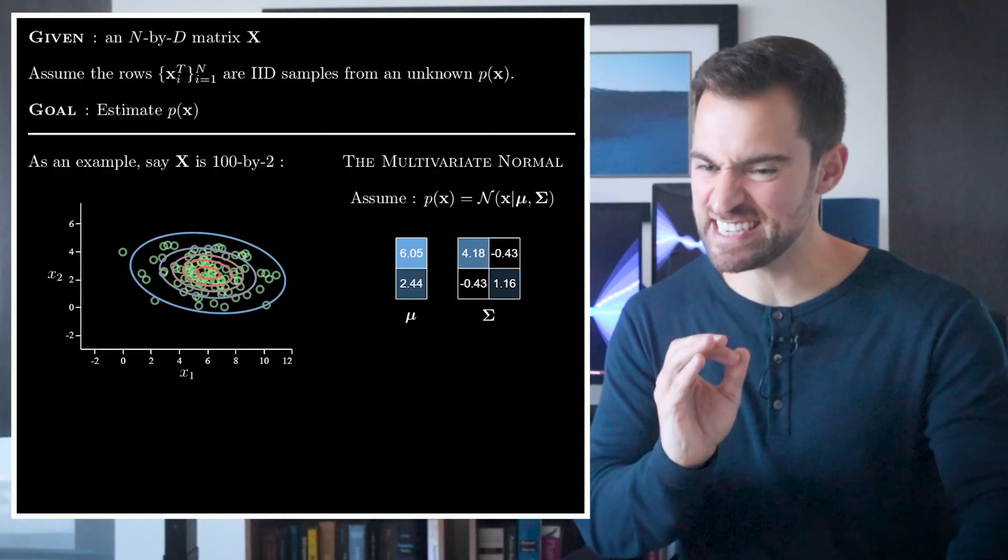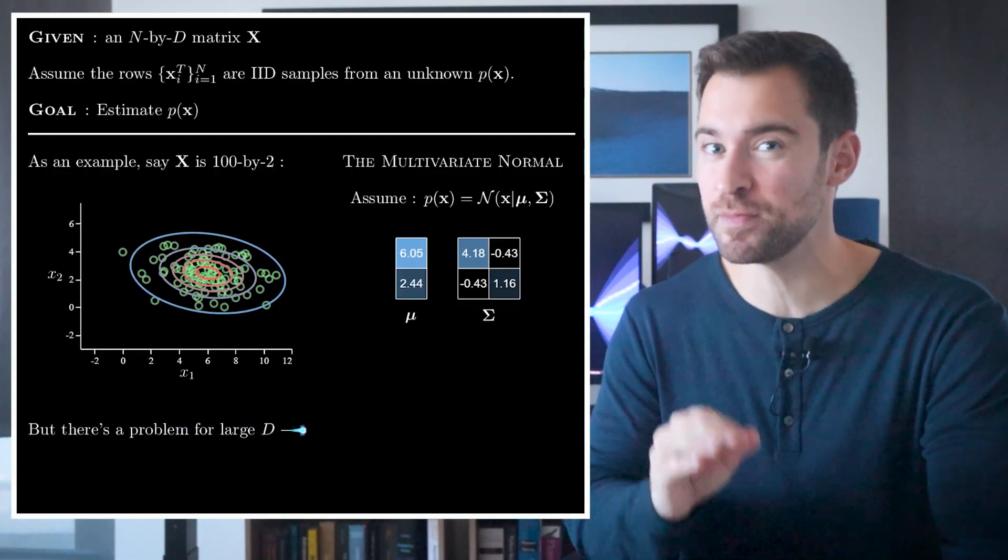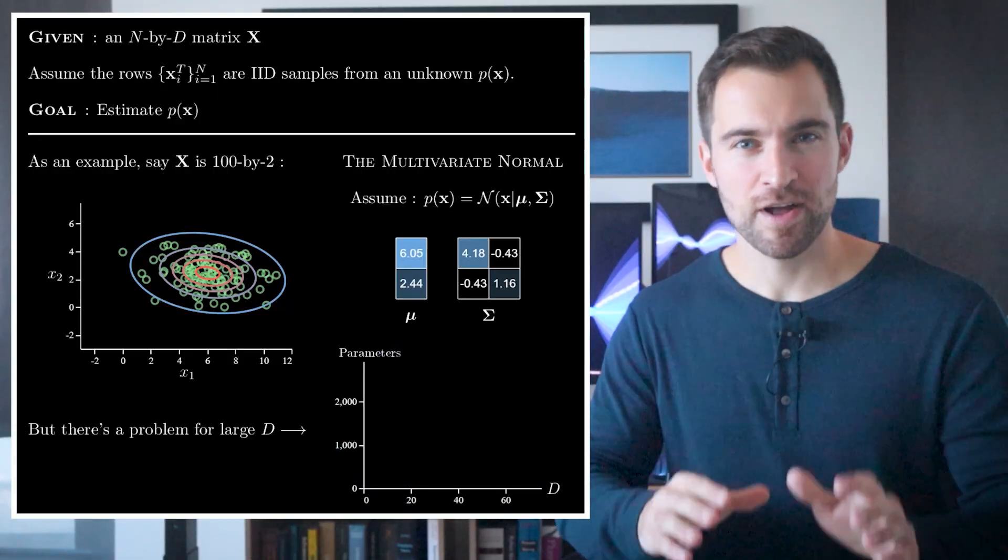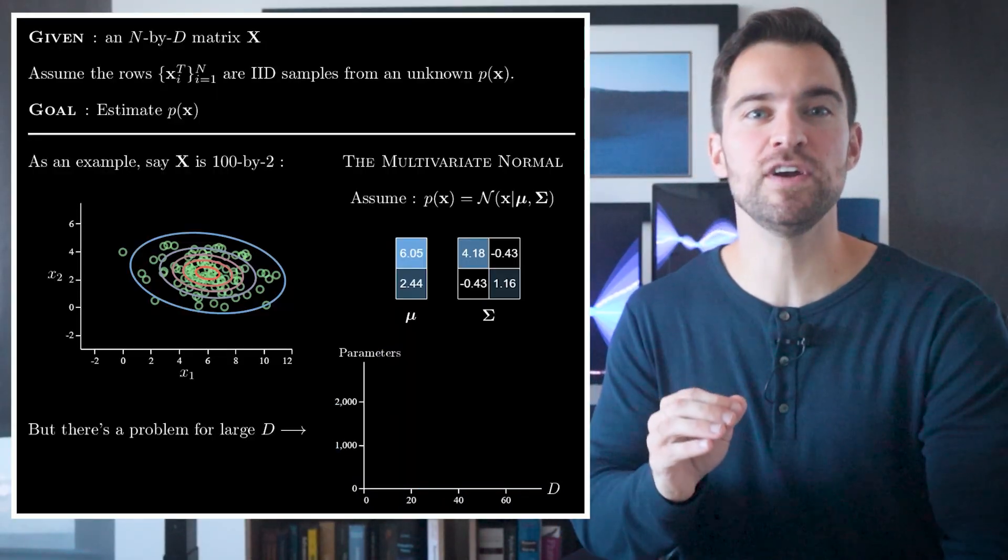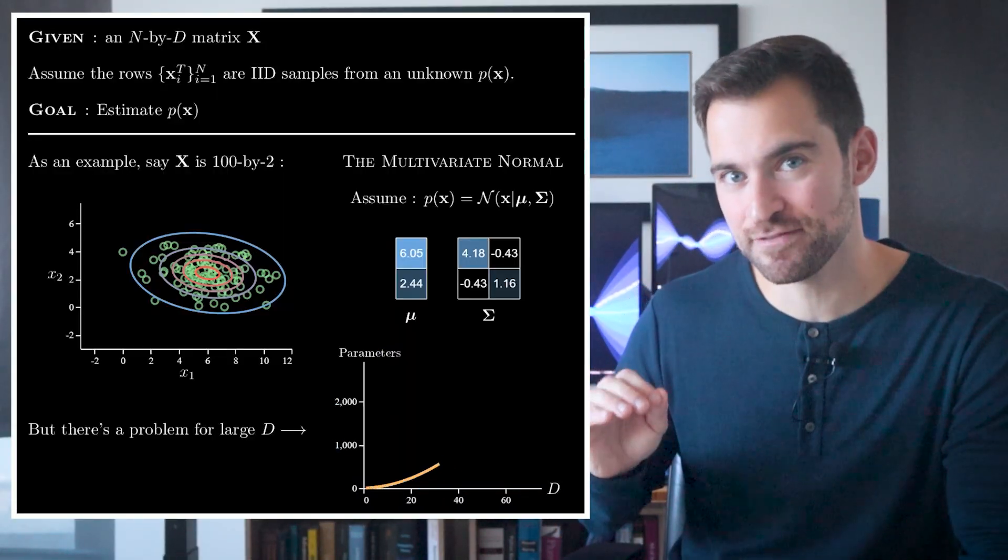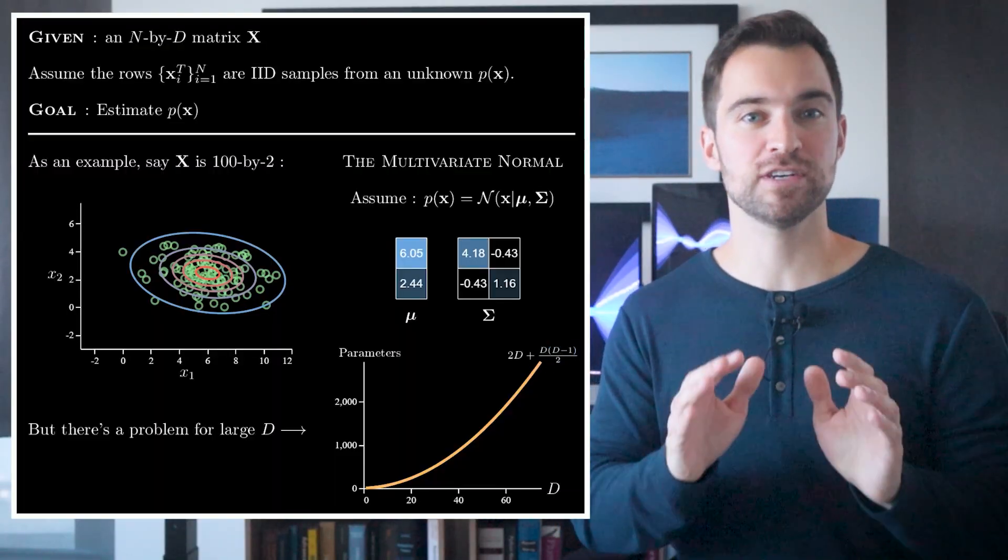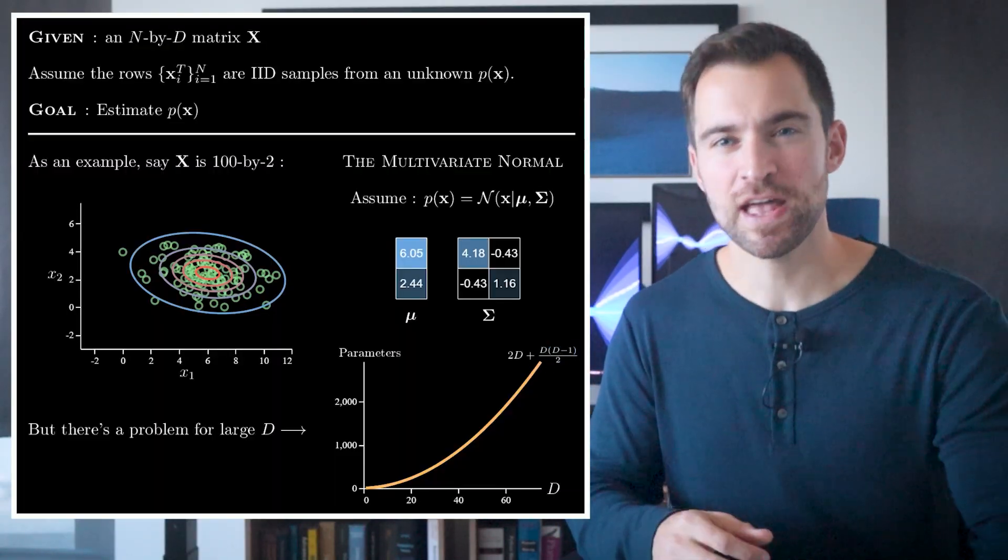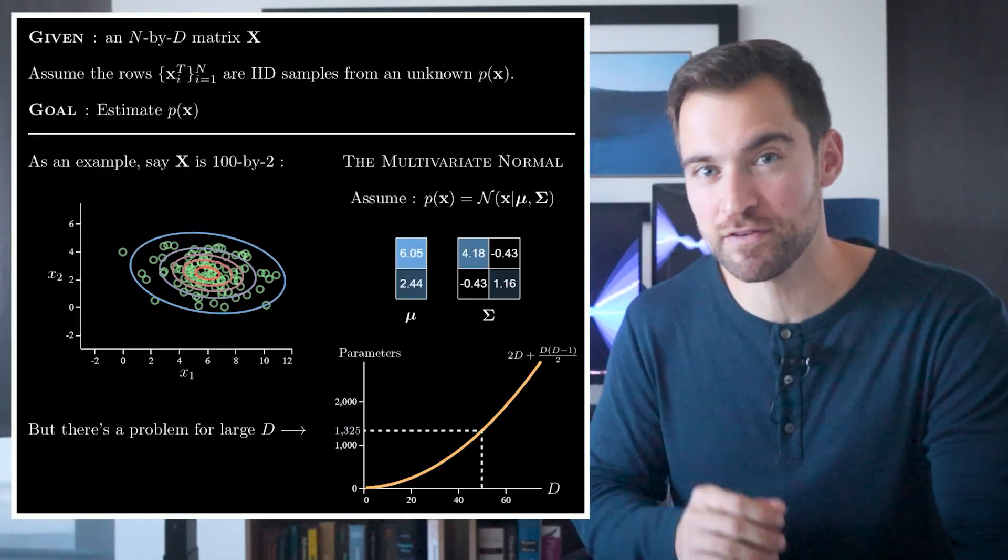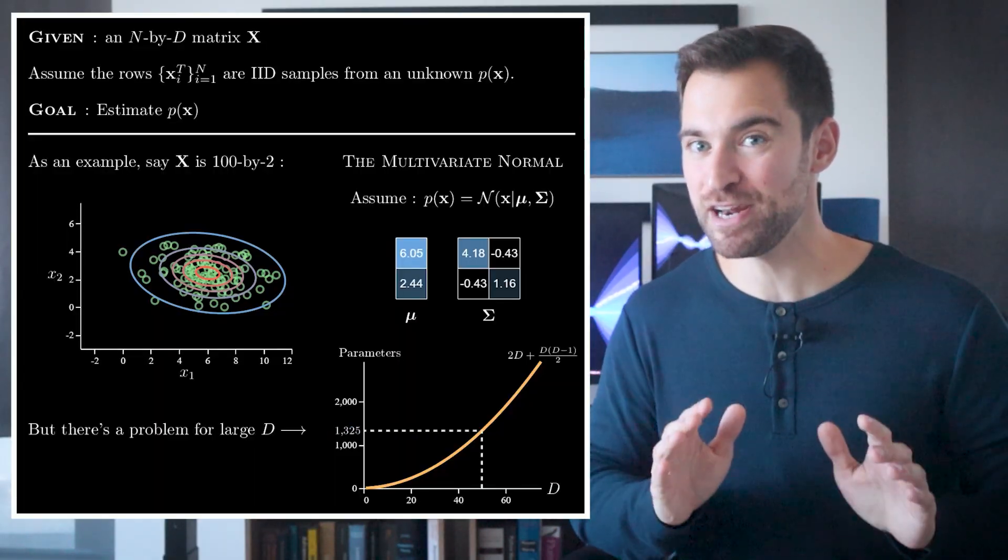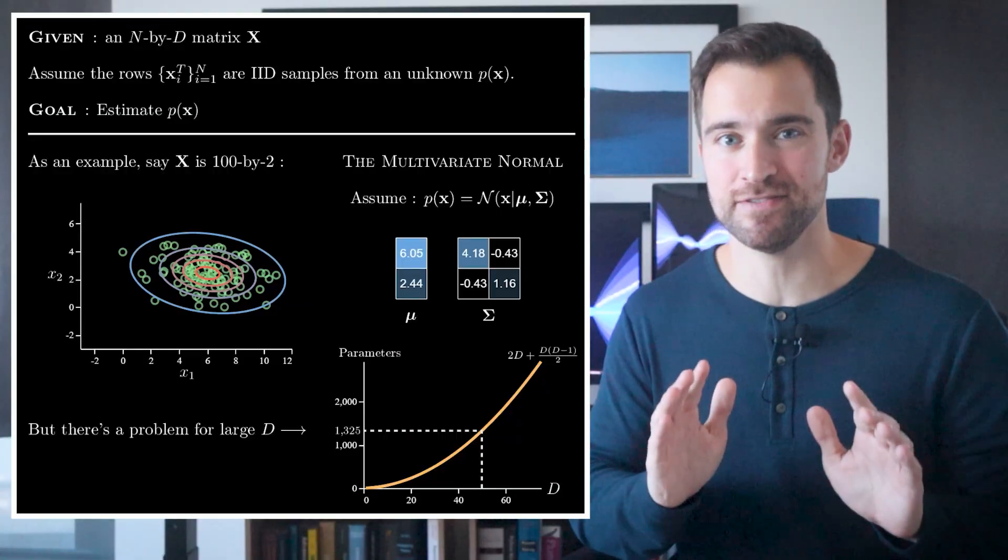Using maximum likelihood will pick parameters such that this data is most likely. But this approach has a terrible, life-threatening problem for large D. That is, the number of parameters in a multivariate normal is given with this function, which grows kind of like D squared. For example, if D equals 50, our multivariate normal would have 1325 parameters.